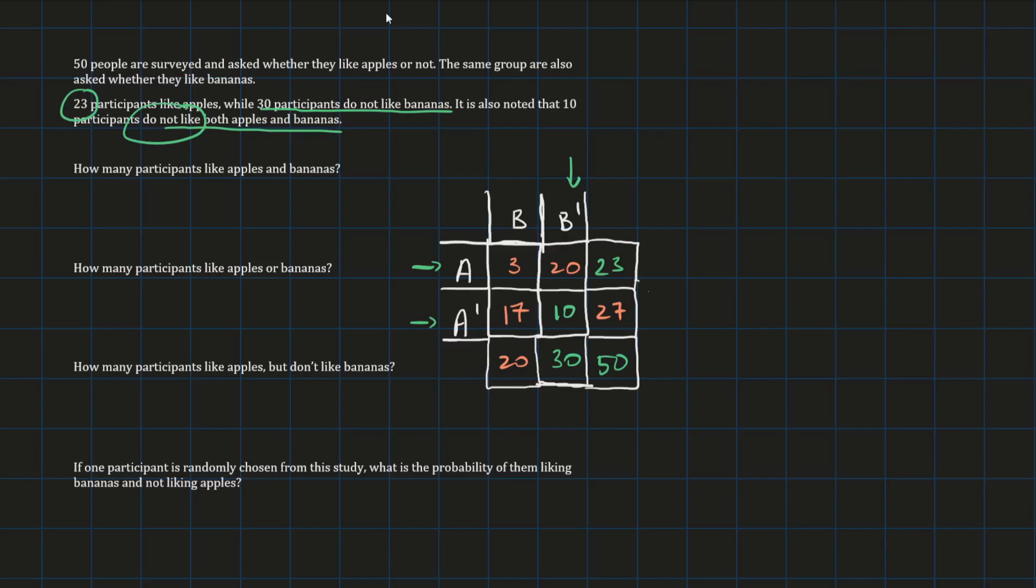Now, with this table here, we should be able to answer these questions very easily. So it is a bit of an investment in your time. However, it will make the rest of the questions a lot easier. So how many participants like apples and bananas? It's really easy to see that that's just 3 because that's the intersection of A and B, liking apples and liking bananas. So we can write it as A intersection B equals 3.